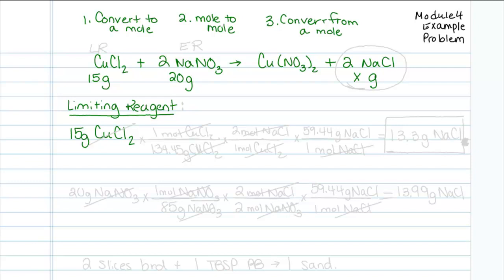15 grams of copper chloride, and my ultimate goal is to figure out the amount of sodium chloride as my product. So I'm going to start off with copper chloride, and for right now I'm just going to ignore sodium nitrate. I'm just going to pretend like it's not even there. What if I had 15 grams of copper chloride? Well, there's 134.45 grams of copper chloride in one mole of copper chloride. For every one mole of copper chloride, you get out two moles of sodium chloride.